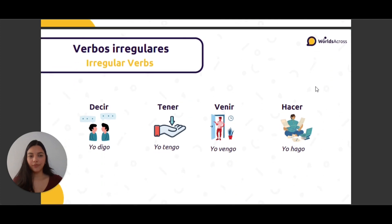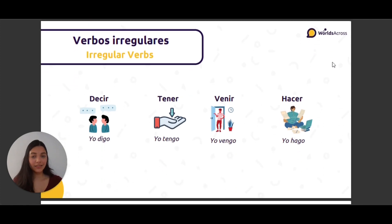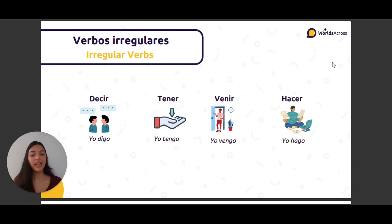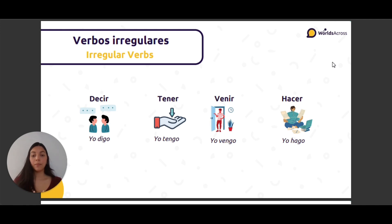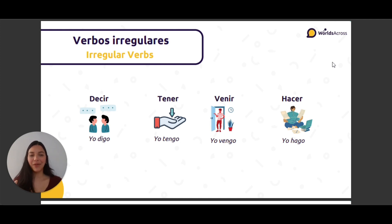So we have the verb decir — yo digo. Tener — yo tengo. Venir — yo vengo. Hacer — yo hago. For example, yo tengo an apple, yo tengo una manzana. I have an apple.